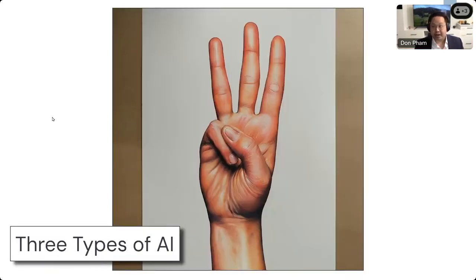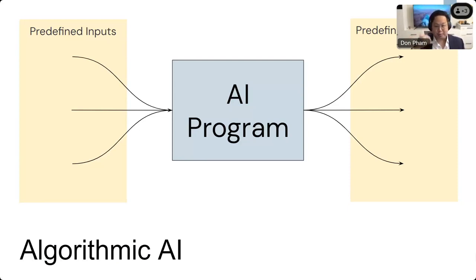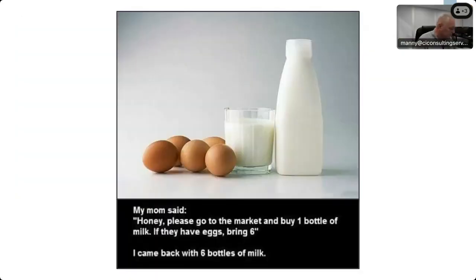I've classified three different types or tiers of AI to help everybody understand. The first is what I call algorithmic AI, which utilizes predefined inputs to create predefined outputs. The easiest example I can give is back in the day when you called into customer service, you'd have those call routing prompts: press one for this department, press two for this department. It's a very primitive form of AI — you only have certain amounts of inputs, and each input is hard-coded into a specific outcome.